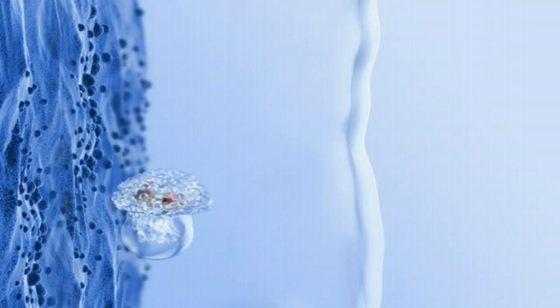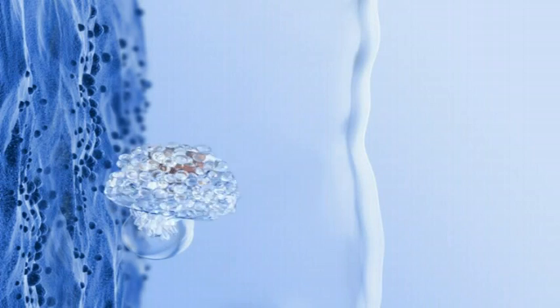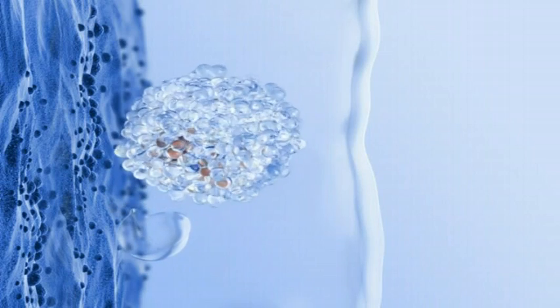Once embedded in uterine secretion, the embryo tumbles around until it is ready to hatch. As the embryo hatches, it increases in diameter about four to five times.